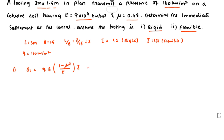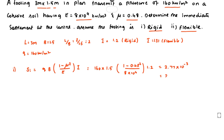Substituting values for the rigid case: Sᵢ = 160 × 1.5 × (1 − 0.48²) / (8×10⁴ × 1.2). Solving this, we get Sᵢ = 2.77×10⁻³ m, which equals 2.77 mm. This is the immediate settlement for the rigid footing.